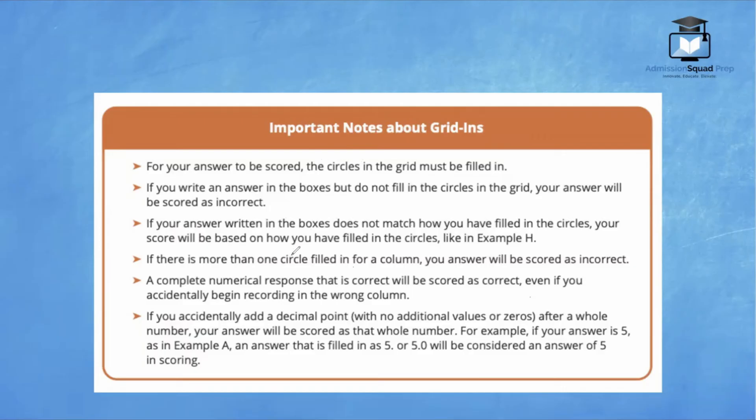If there is more than one circle filled in for a column, your answer will be scored as incorrect. A complete numerical response that is correct will be scored as correct, even if you accidentally begin recording in the wrong column.